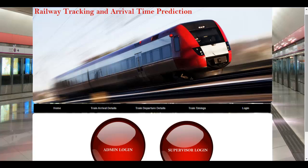The system works like this: when a train departs late from a station, the admin will enter details about the departure and its time. This information goes in real time to the internet server and is retrieved on the other system through the internet server, showing the details on screen. This project publishes real-time train schedule events to subscribing multiple client applications.